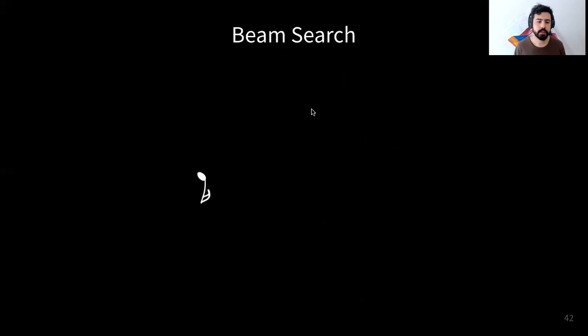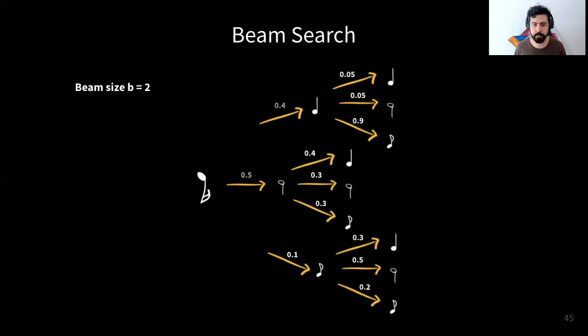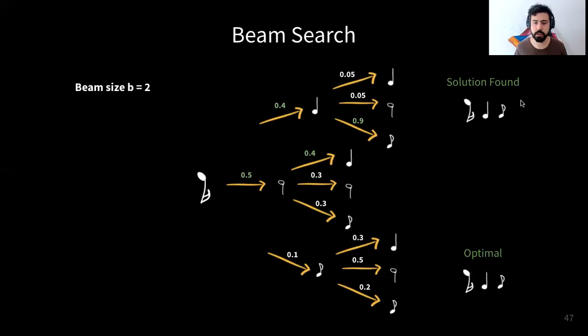One way to solve this is using beam search. Instead of only keeping the best node, beam search keeps the top b nodes, where b is a parameter called beam size. At each expansion step, you keep the b best candidates. By multiplying probabilities along paths, you can find better solutions. Beam search works well in practice but is not guaranteed to find the optimal solution in every search problem.